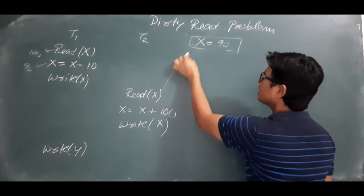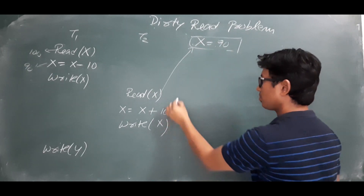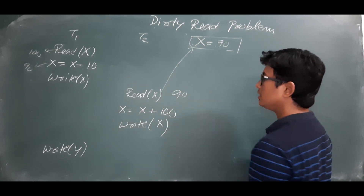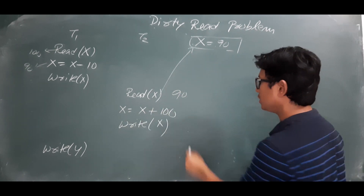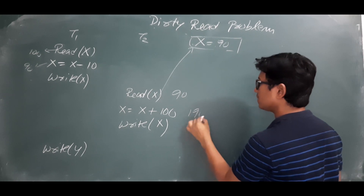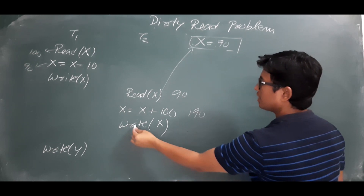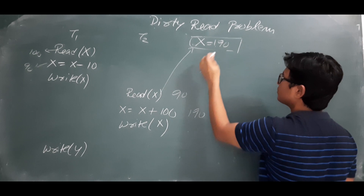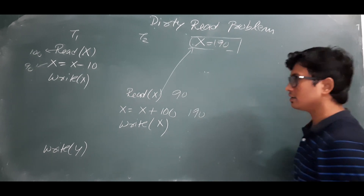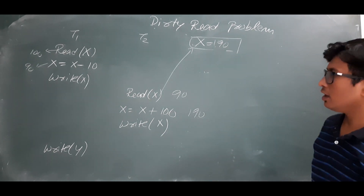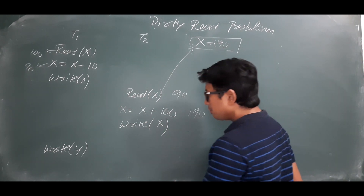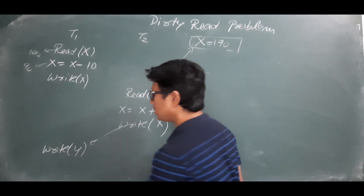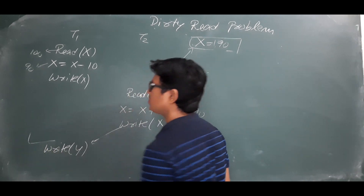Now transaction T2 is reading the value. What value will it read? It will read x as 90. Now x is equal to x plus 100, so it will be 190. T2 writes x as 190, modifying it to 190.